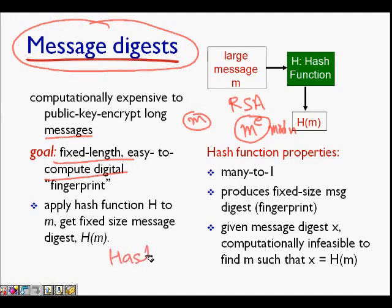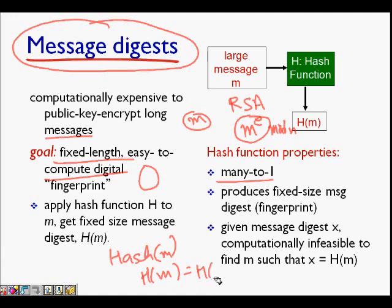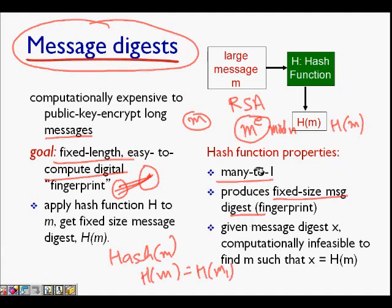The goal is a fixed-length, easy-to-compute digital fingerprint. So we use a hash function. The properties of a hash function: first, it is many-to-one — H(M) can equal H(M') — so more than one value can map to the same output. Second, it produces a fixed-size output. Third and most important, given a message digest X = H(M), it is computationally infeasible to find M.